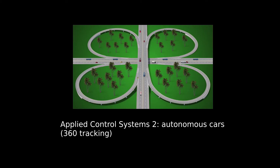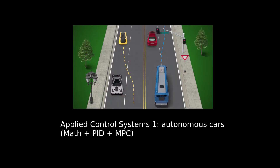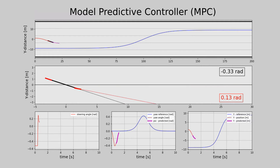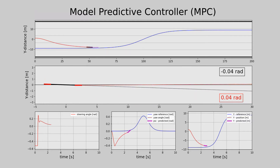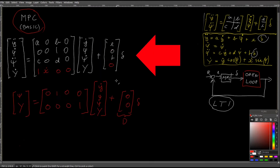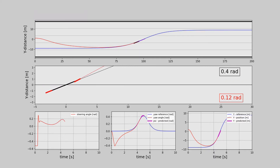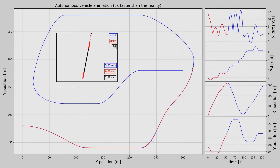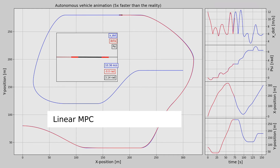This course is a direct continuation to the course 'Apply Control Systems 1: Autonomous Cars.' In the previous course, the MPC controller only allowed the car to change lanes on a straight road. We applied a small angle approximation to convert our nonlinear model to linear time-invariant. It made our lives easier, but it also restricted our controller. In this course, however, we will remove that simplification.